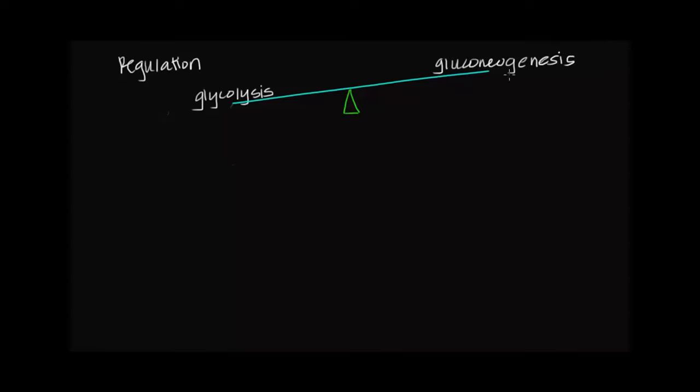When we're talking about the regulation of these particular pathways, we're essentially asking when is glycolysis the predominant pathway and when is gluconeogenesis the predominant pathway. The body wants to make sure we either have a net breakdown of glucose in the case of glycolysis, or a net production of glucose in the case of gluconeogenesis.